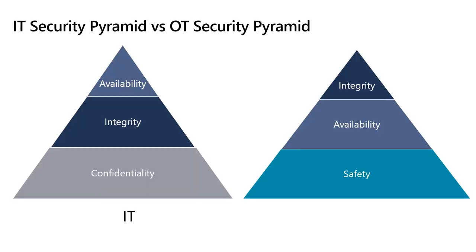James points to differences between IT and OT cybersecurity pyramids, which he has a graphic for. IT cybersecurity boils down to the CIA triad — confidentiality, integrity, and availability — and that order reflects the hierarchy of needs. Confidentiality is the most important on the IT side.